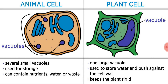Animal cells have small-sized vacuoles, whereas plant cells have one large vacuole. In animal cells, vacuoles are used for storage and contain nutrients, water, or waste. In plant cells, they are used to store water and keep the plant rigid.